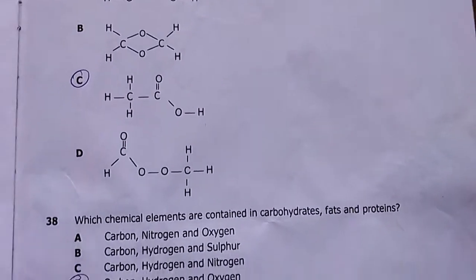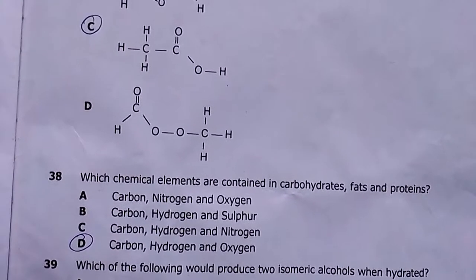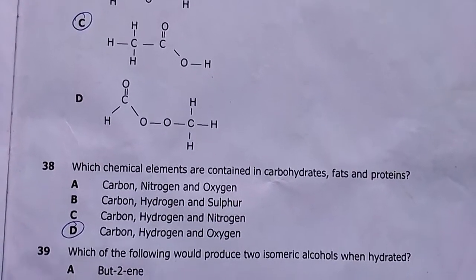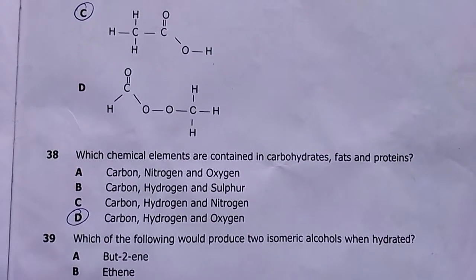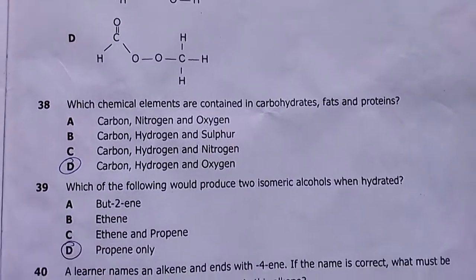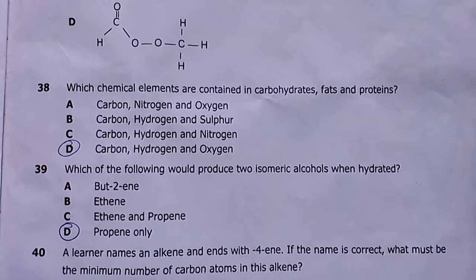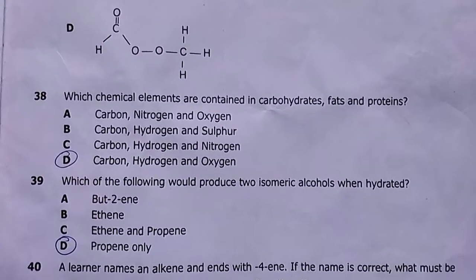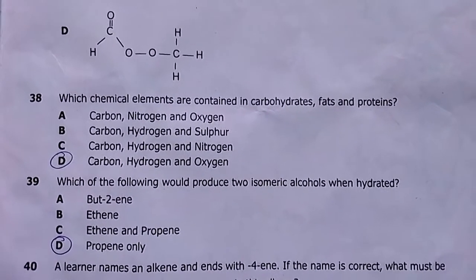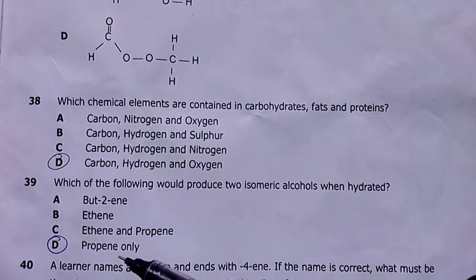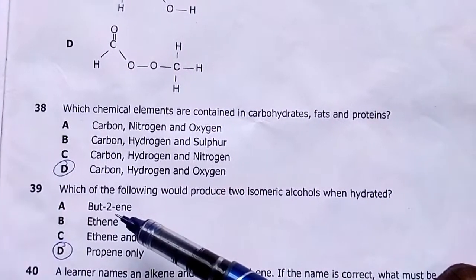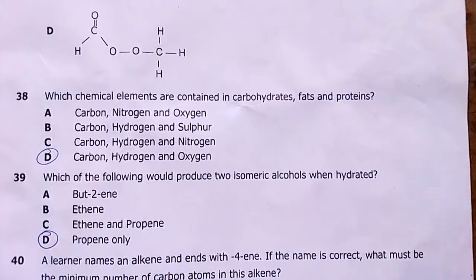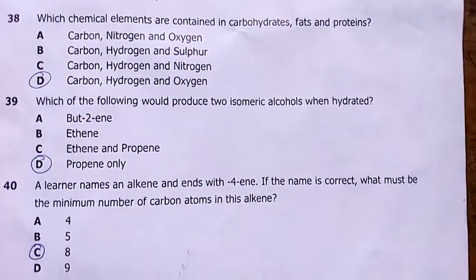Number thirty-eight: which chemical elements are contained in carbohydrates, fats and lipids? You have to look at what is found in all three — answer D. Number thirty-nine: which of the following would produce two isomeric alcohols when hydrated? My answer is D — propene produces two isomeric alcohols upon hydration; butene does not really form isomers in the same way.